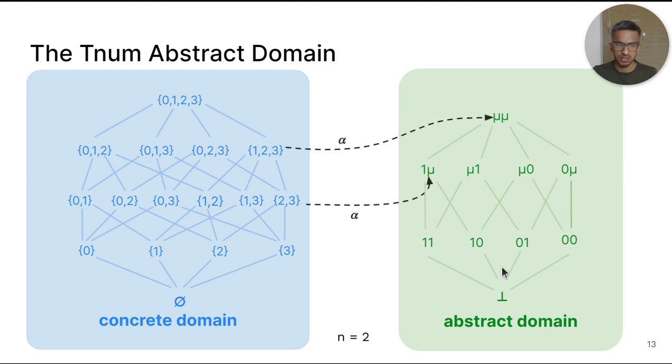In abstract interpretation, we define two functions called the abstraction function and the concretization function. The abstraction function alpha takes an element from the concrete domain and produces an abstract value. Here, alpha takes the set {2,3} and converts it to 1 mu. The concretization function gamma produces a concrete set from an abstract value.